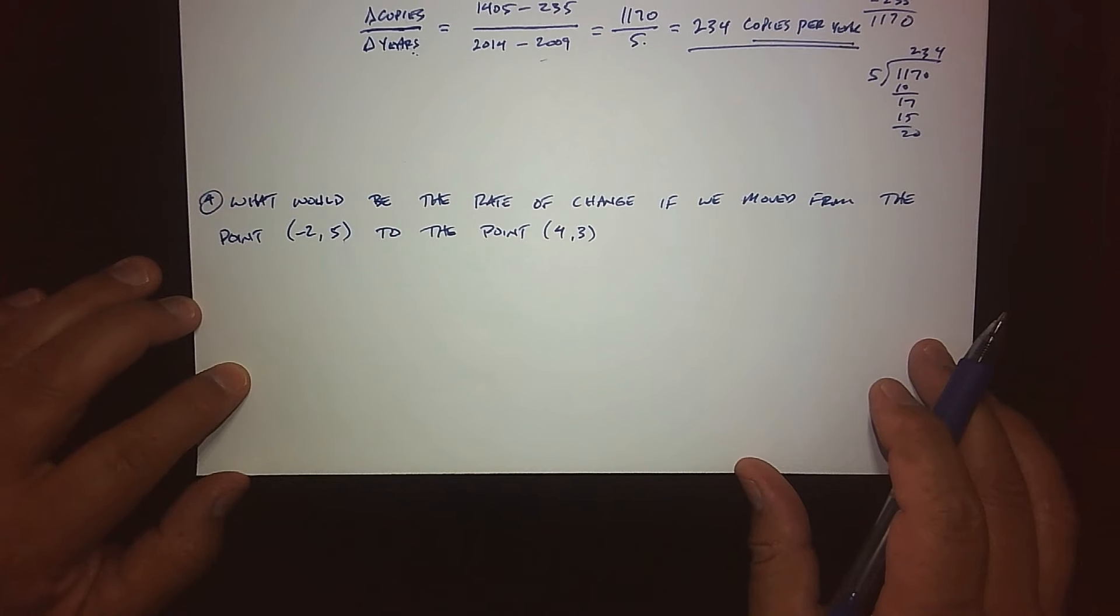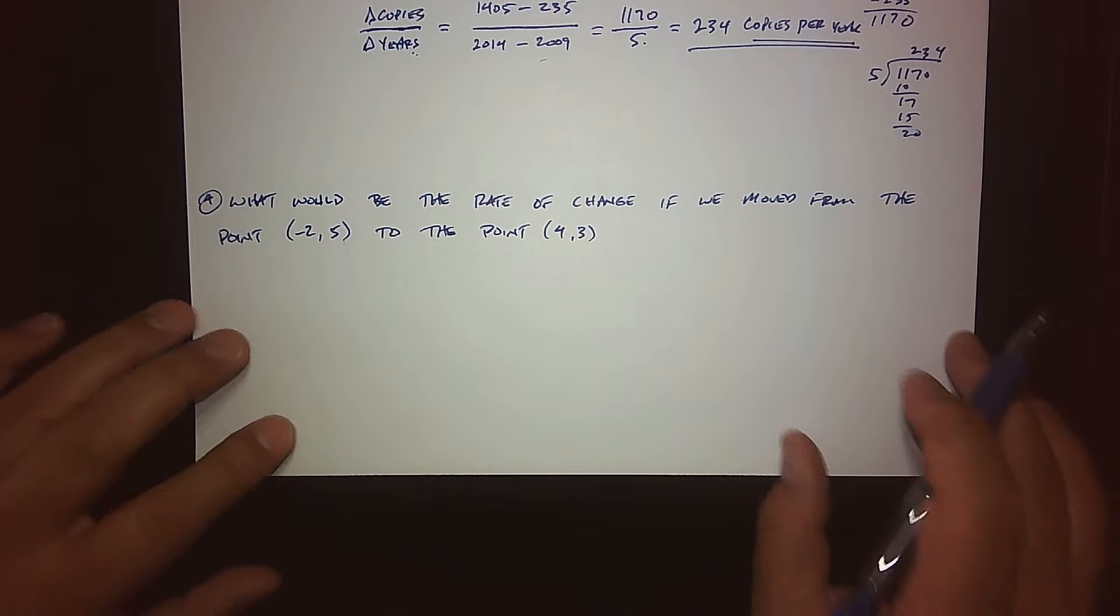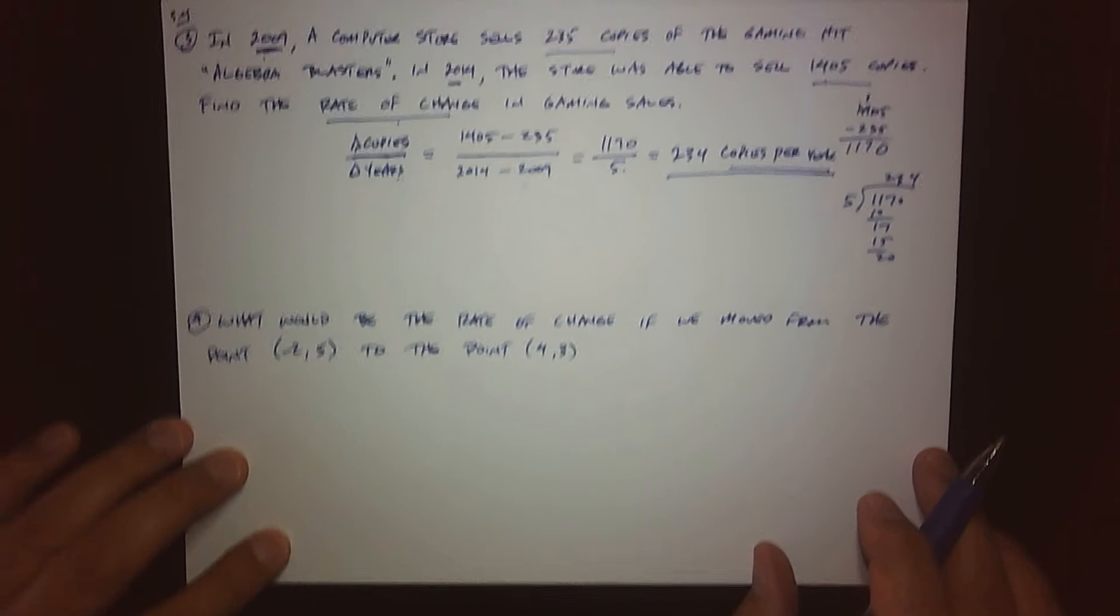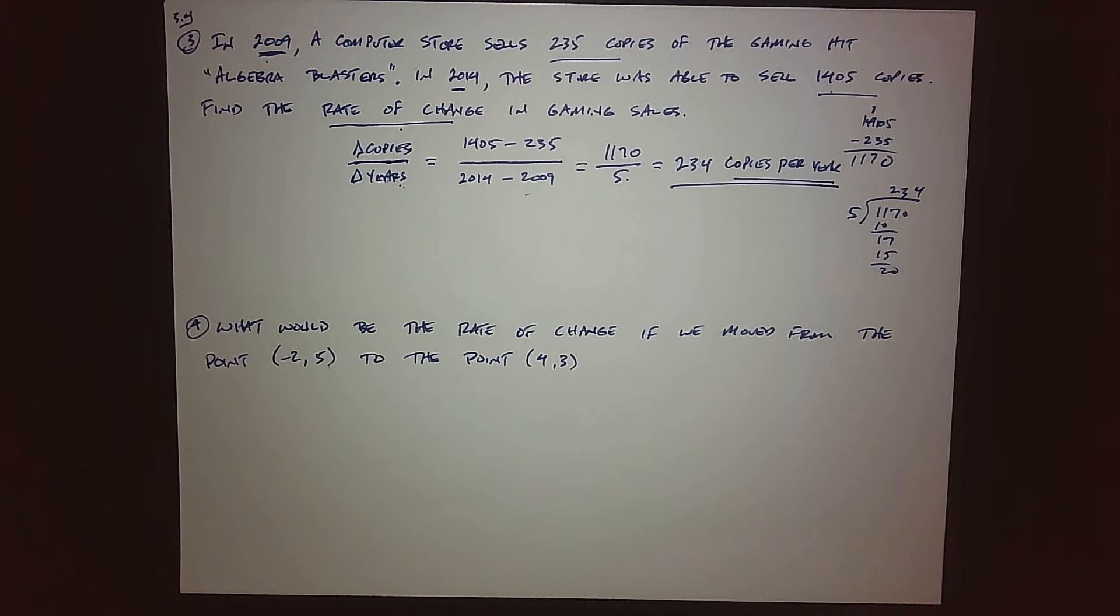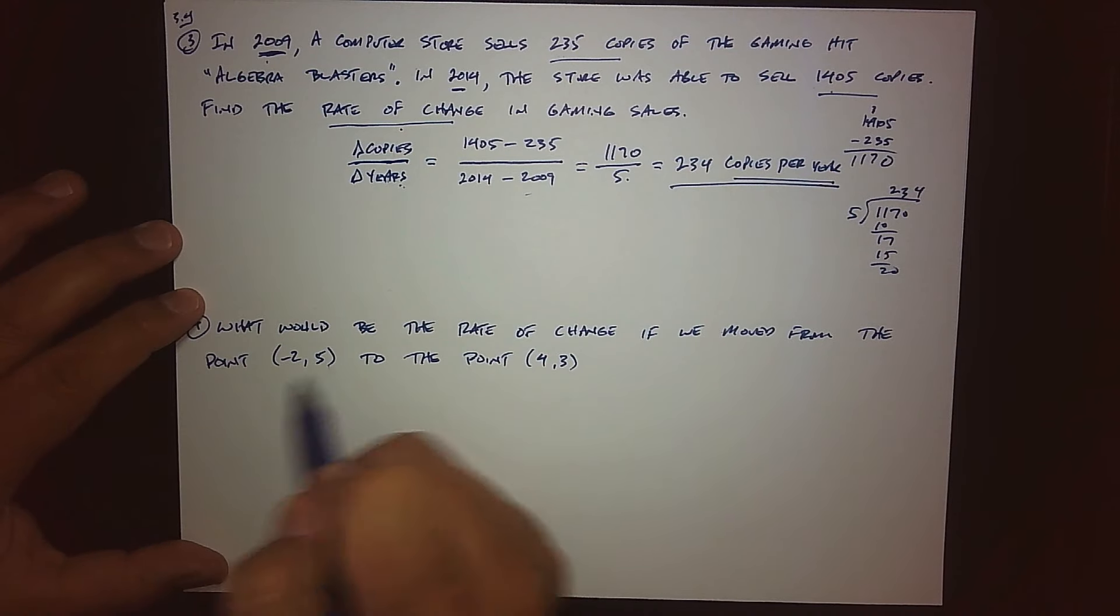So another situation: what would be the rate of change if we moved from the point (-2, 5) to the point (4, 3)? Hmm. All right, so this one's kind of tougher. There's no language telling us what the two changing quantities are. We really have to put our thinking caps on.